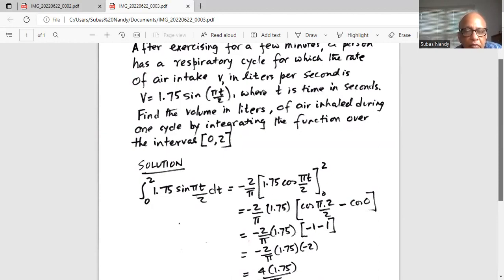So we have minus 2 over pi, 1.75. Cosine 2 and 2 cancel. So it's cosine of pi, the first term, which is minus 1, minus cosine of 0, which is 1.